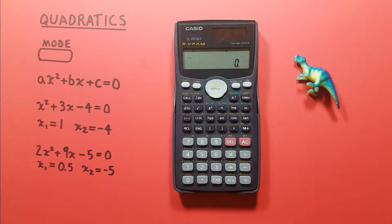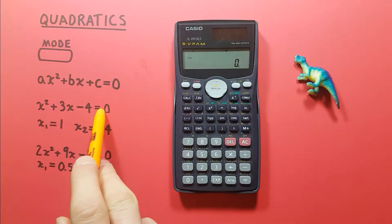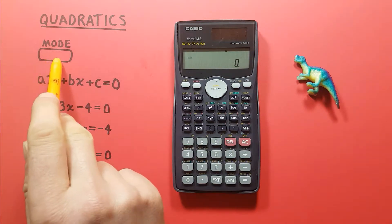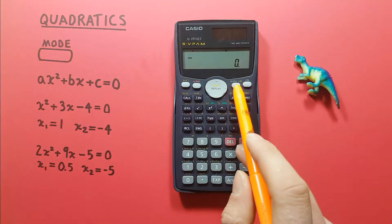So an example of this quadratic equation would be something like this. And if we want to solve it on our calculator we need to use the mode key that looks like this and is located here.